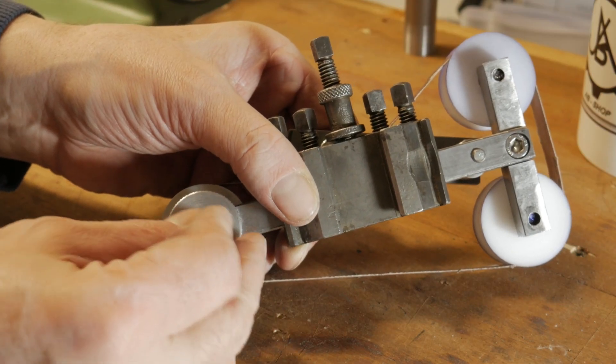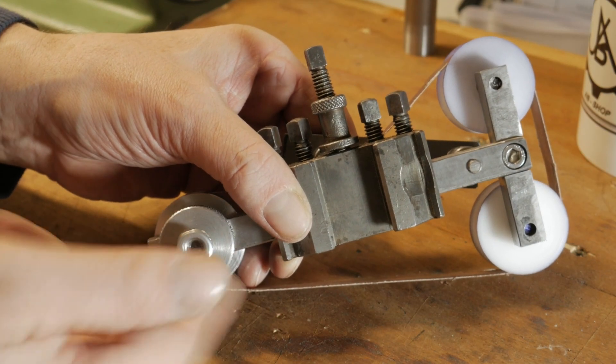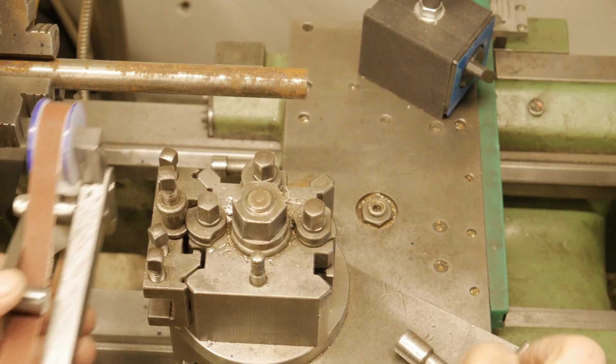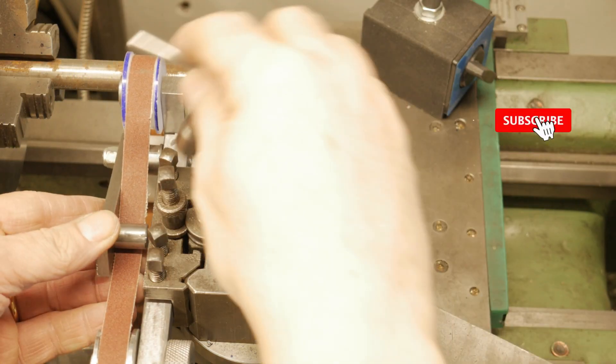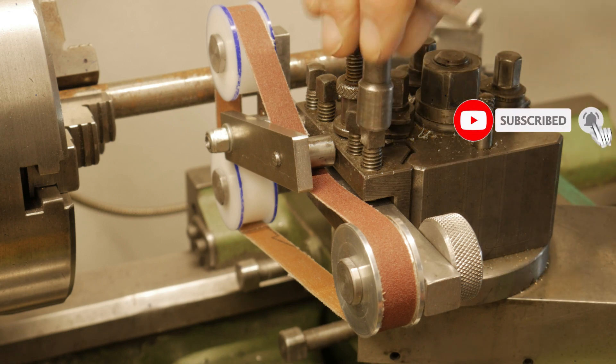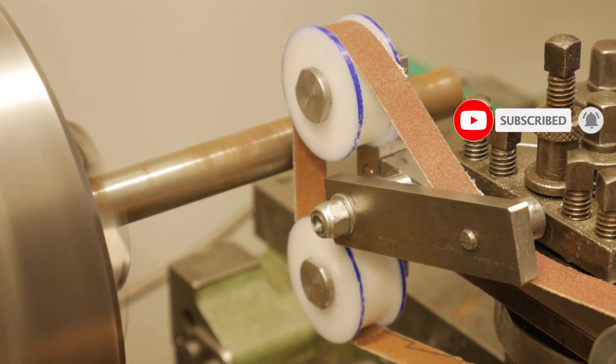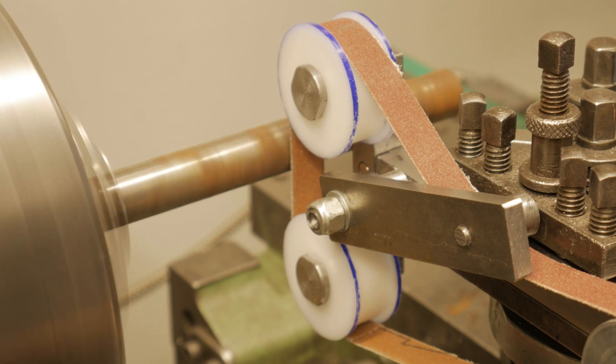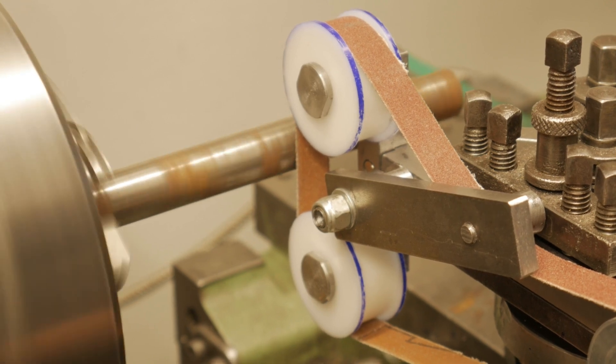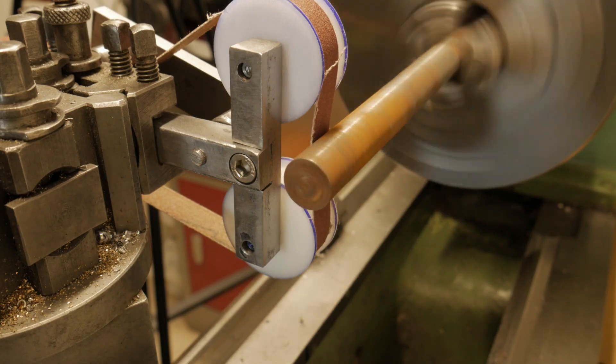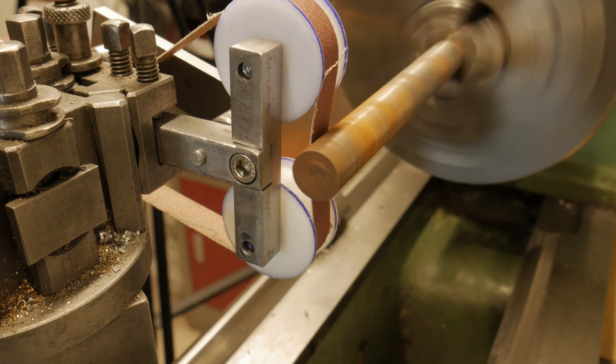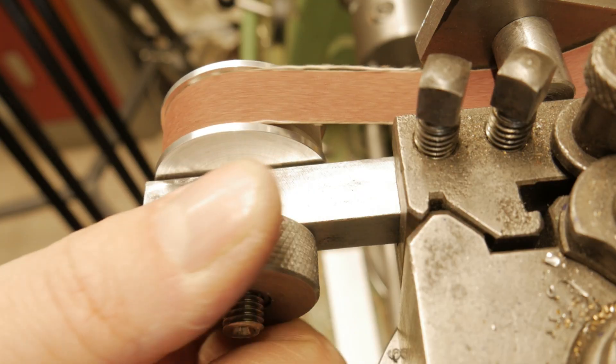And the moment for the testing on the lathe arrived. The lathe test showed that light pressure was enough to get a good job. By turning the knurled disc it was possible to change the worn part of the cloth for the new one that was ready to be used.